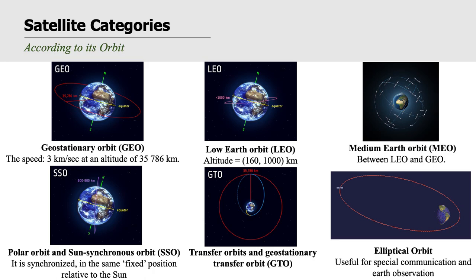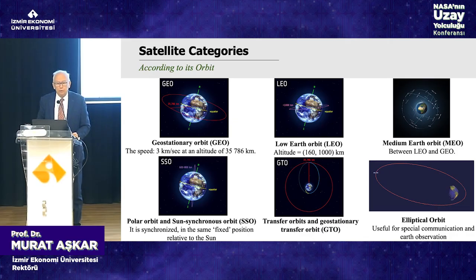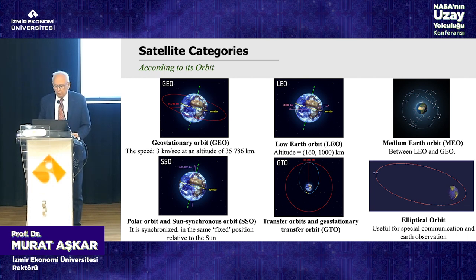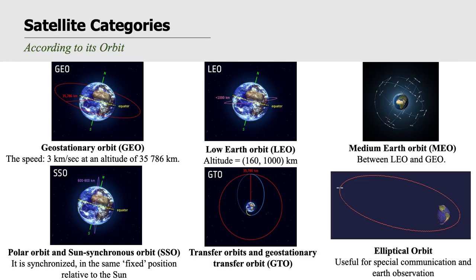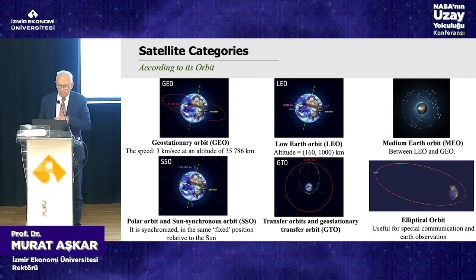There are also other types of satellites. For Earth observation, we use low-orbit satellites, where the altitude will be around 160 up to 1,000 kilometers. In between, we have medium-orbit satellites, usually constellations for navigation satellites.